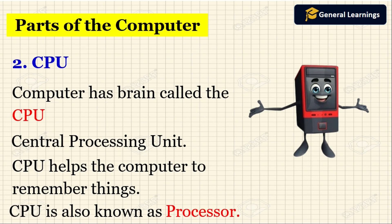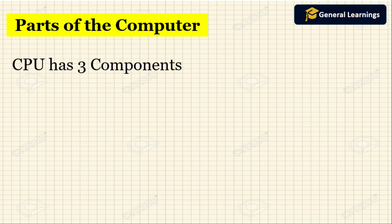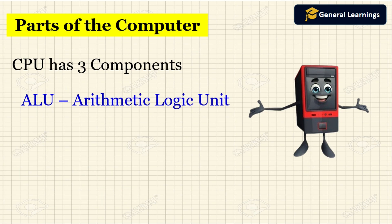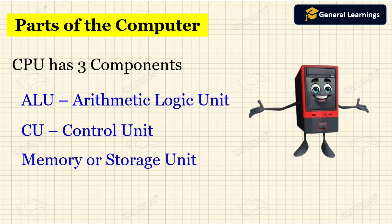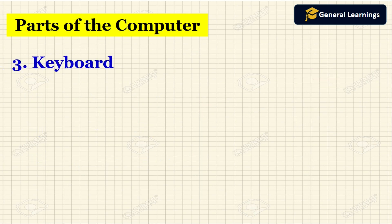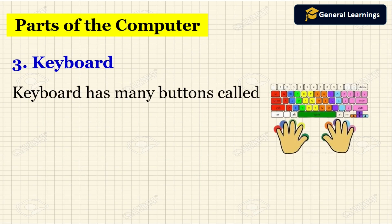The CPU has three components. The first one is ALU, which means Arithmetic Logic Unit. The next one is CU, which means Control Unit. And the last one is the Memory or Storage Unit. These three — ALU, CU, and Memory or Storage Unit — are the components of the CPU.